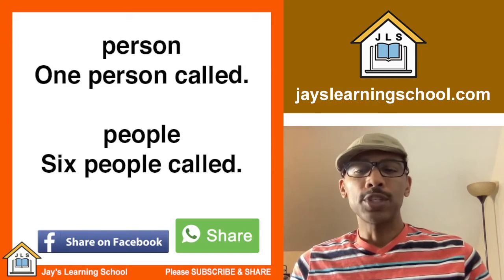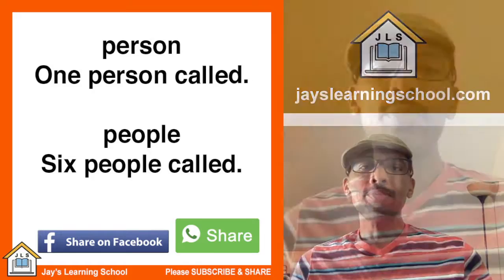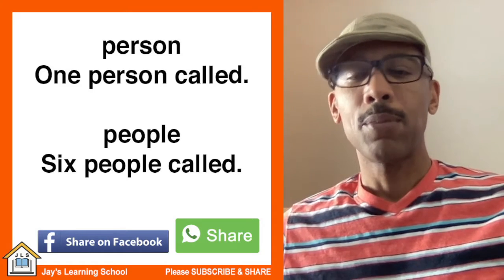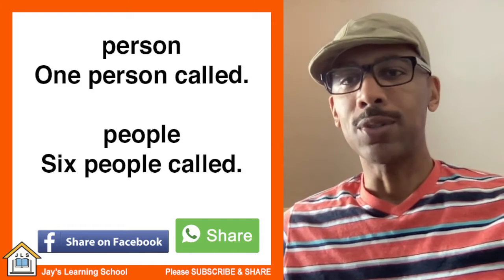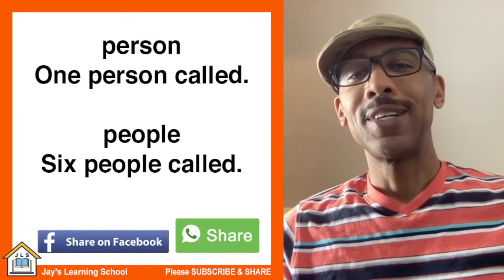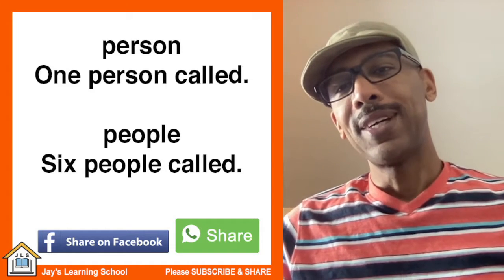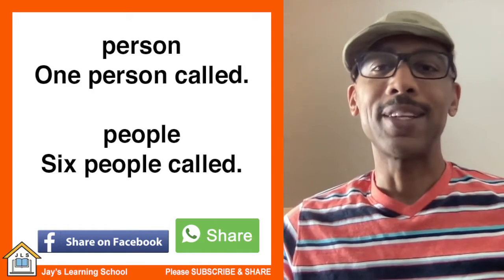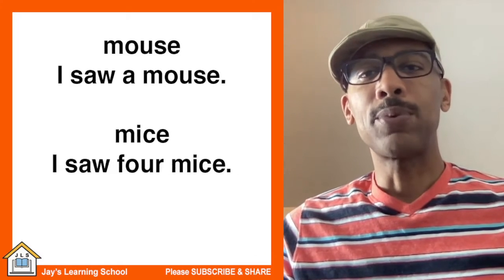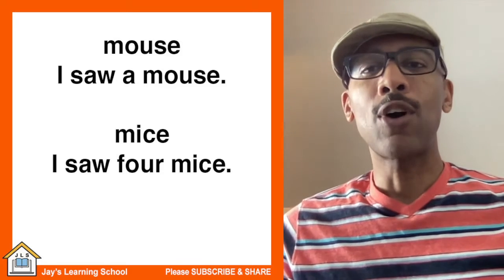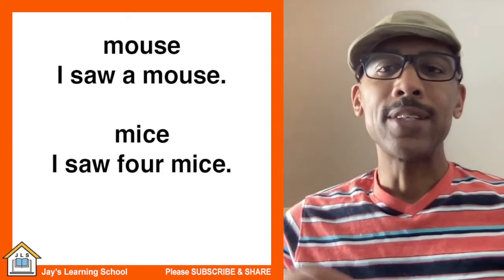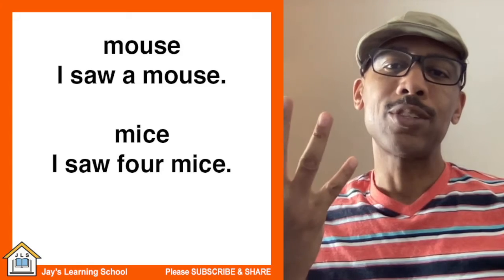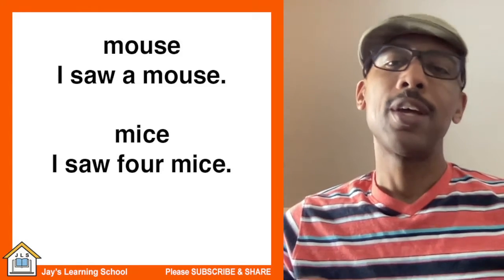Another example: person and people. One person called, but on the other hand you would say six people called. You can say 'one person called' or 'six people called' — person and people. Another example: mouse and mice. I saw a mouse. I saw four mice. Singular and plural.